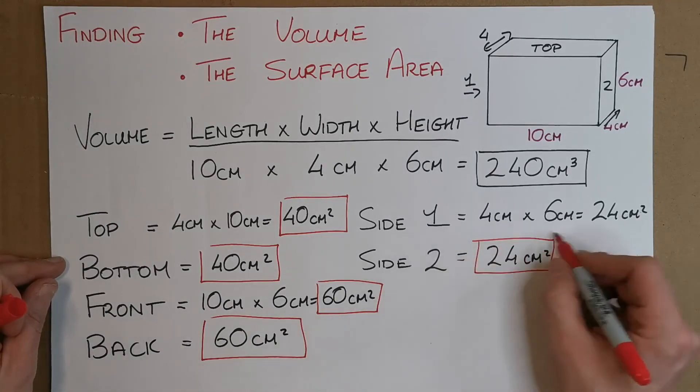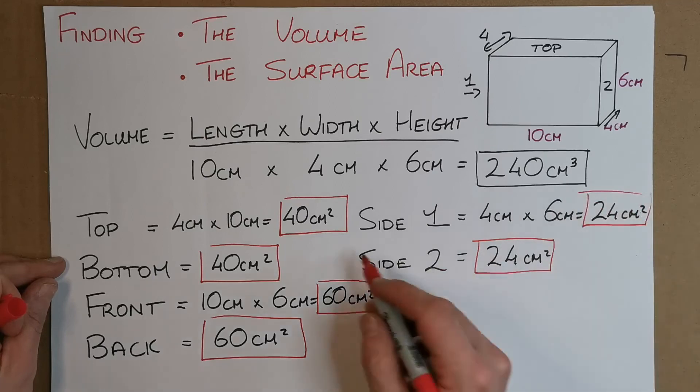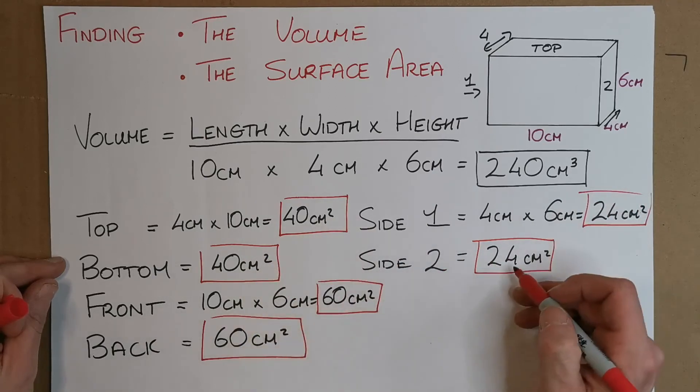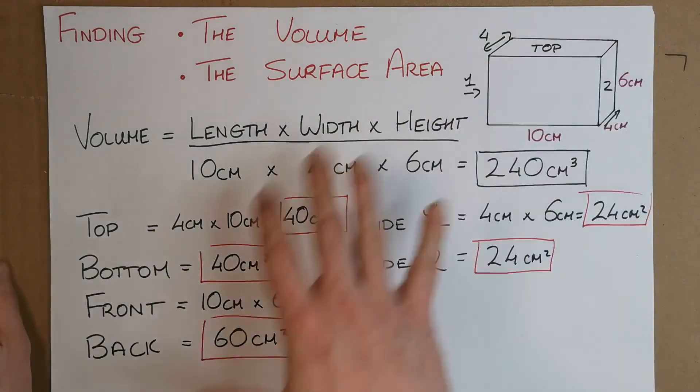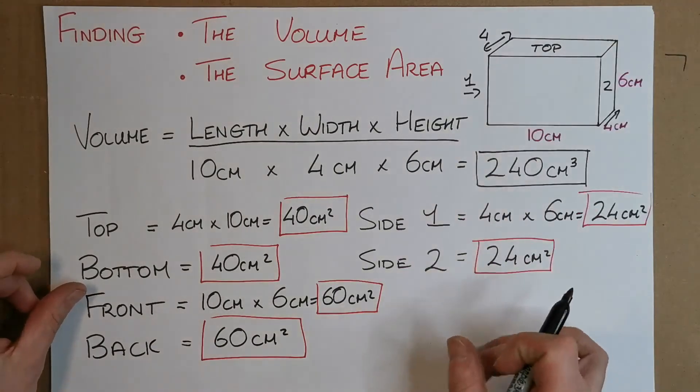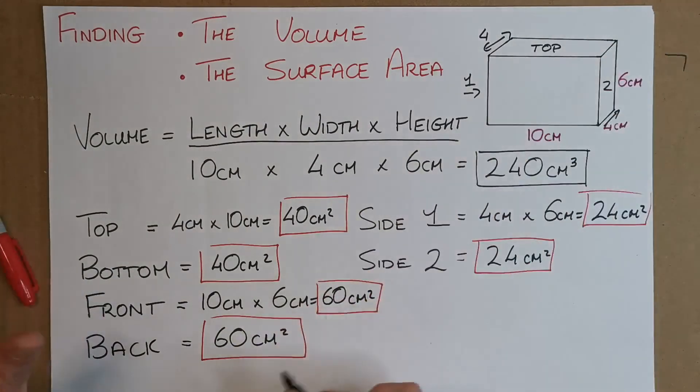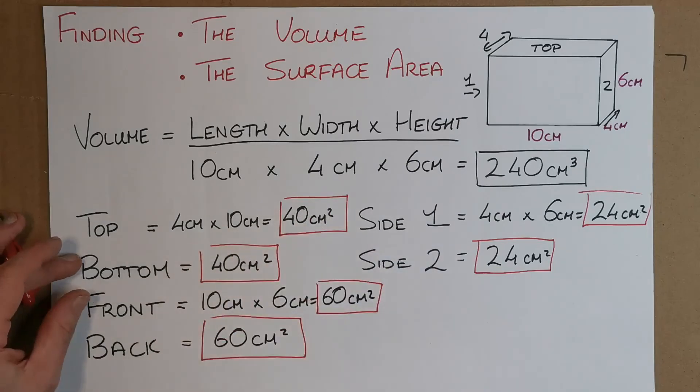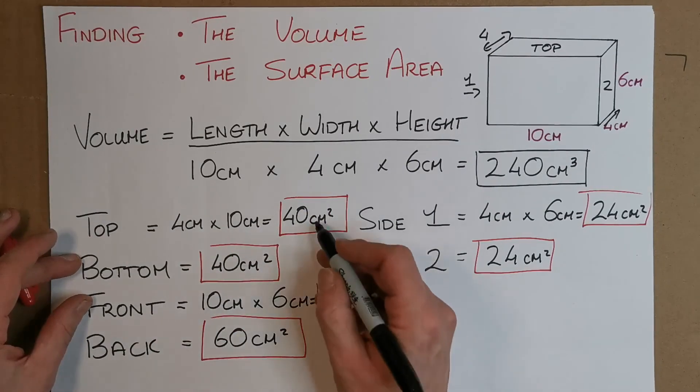So this is also 24 centimeters squared. So again, I have each side calculated: 1, 2, 3, 4, 5, 6. So all six sides come together now. They don't multiply, we're adding them all together. We're taking the front and the back, we just add them all up. So all these numbers in red boxes, I'm going to add all these.